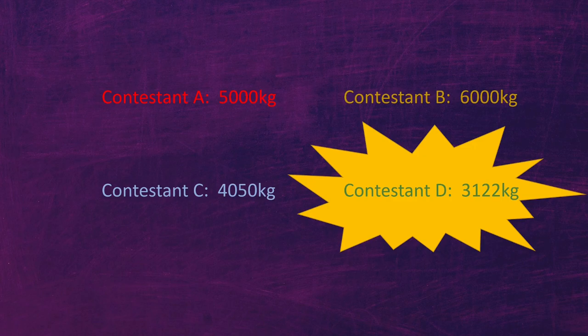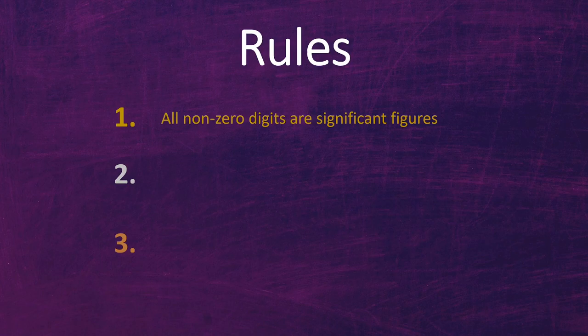Let's take a look at contestants A and B. They guessed 5,000 and 6,000, but do you really think they mean exactly 5,000 or exactly 6,000? Probably not. Those zeros don't reflect any type of confidence — they just give the impression of an estimate. Whereas contestant D's answer, 3,122, shows specificity. Why 3,122? Are you so sure it's not 3,123? Because contestant D is so specific with these non-zero digits, that shows the most confidence. This brings us to the first rule of significant figures: all non-zero digits are significant figures. That means any digit from 1 to 9 is automatically significant, and rules 2 and 3 must deal with the annoying zero.